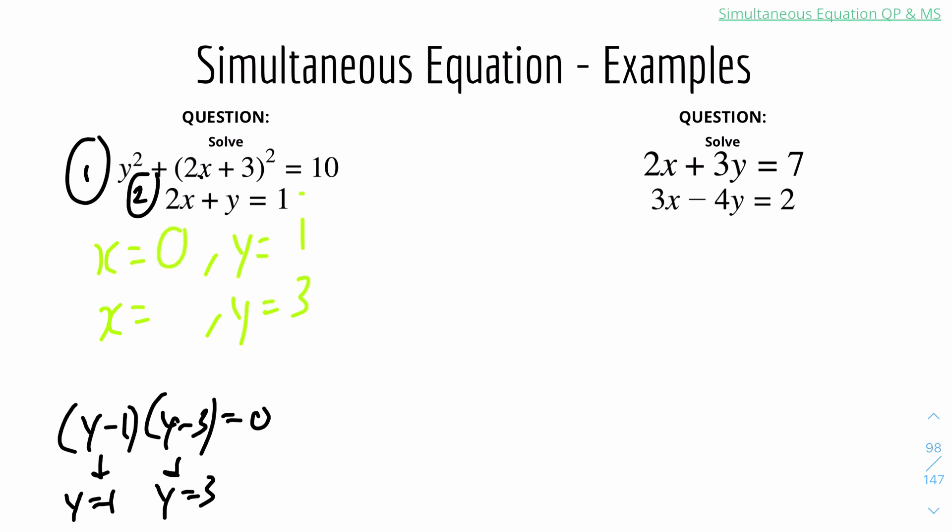Point number 2, 2x plus 3 equals 1. And 1 minus 3 will get us minus 2, and minus 2 divided by 2 will be minus 1. So these are two possible values. When x is 0, y is 1. And when x is minus 1, y will be 3. And that's it.